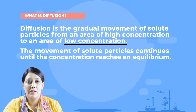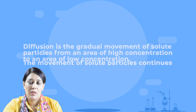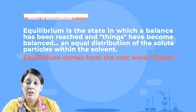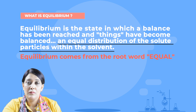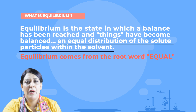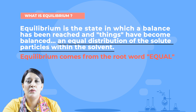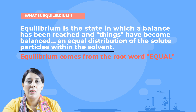The movement of solute particles continues until the concentration reaches an equilibrium. Equilibrium means the state in which a balance has been reached — an equal distribution of solute particles within the solvent. Equilibrium comes from the root word 'equal'.